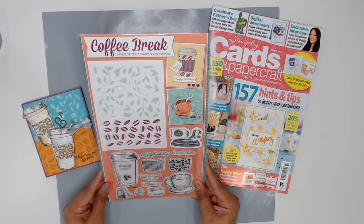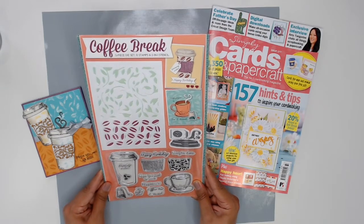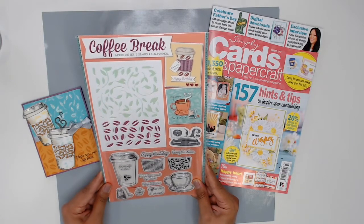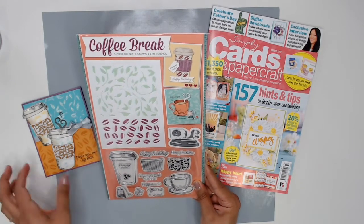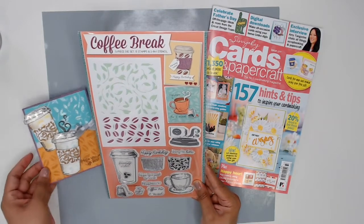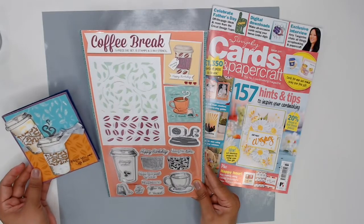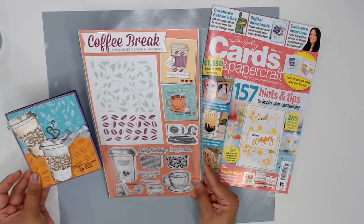In this free gift we have a five piece die set, 13 stamps, and a two-in-one stencil and these work together so well. They're really fun and you can make so many things not just feminine cards but also masculine makes. So let's jump into the tutorial.